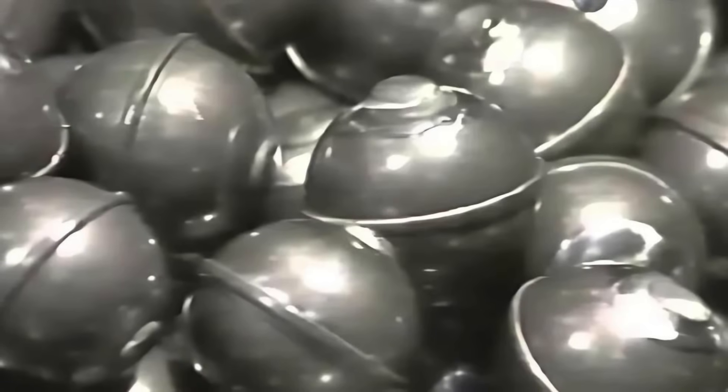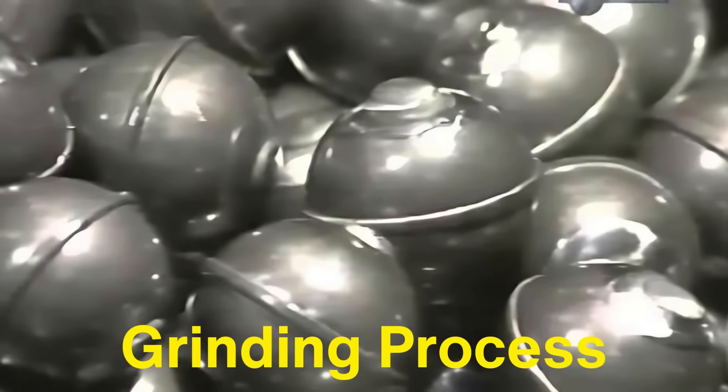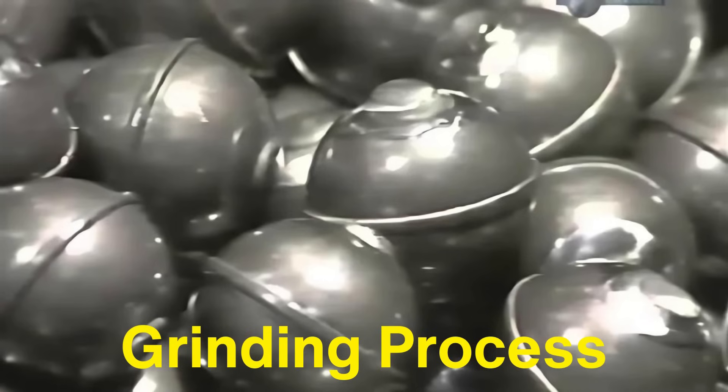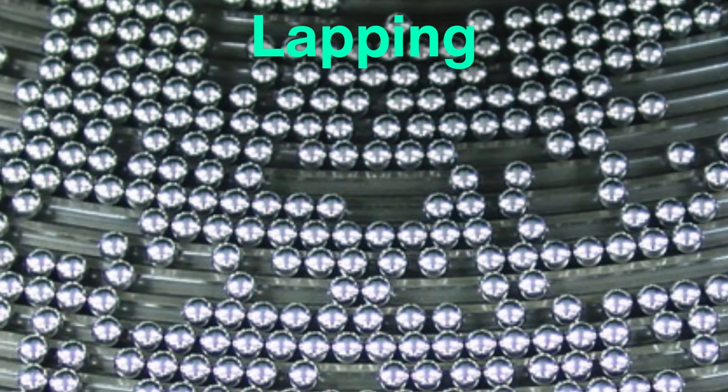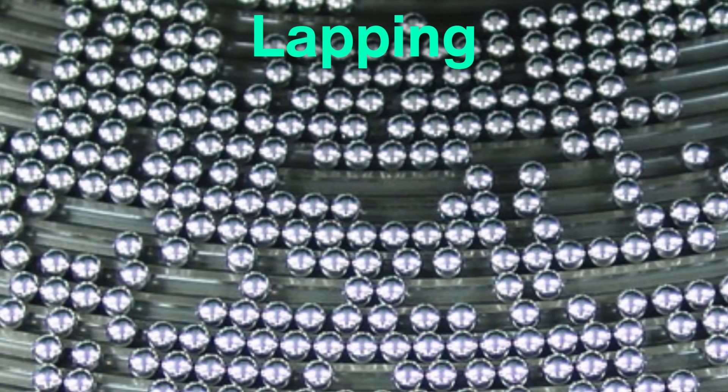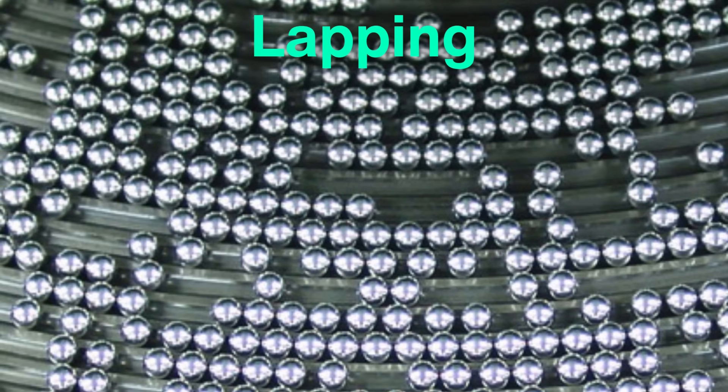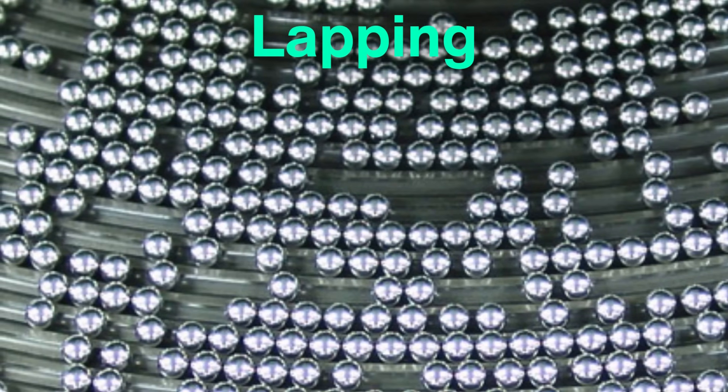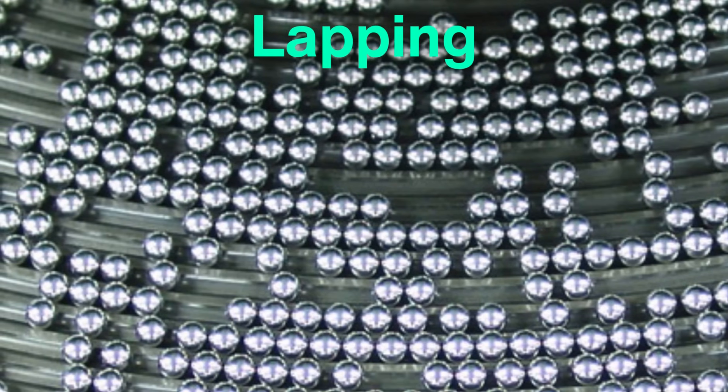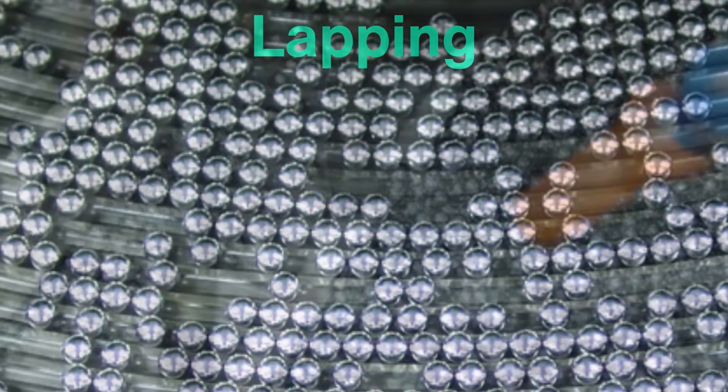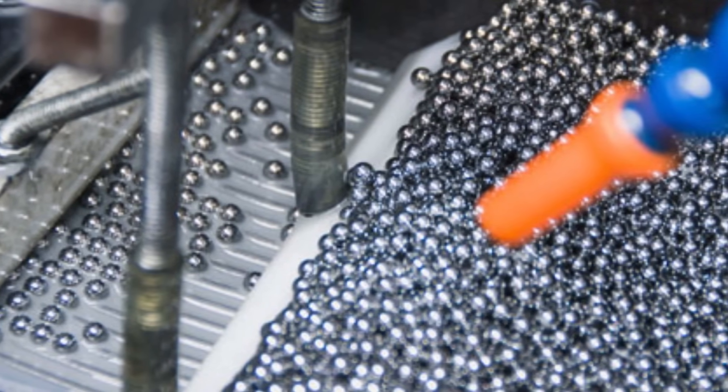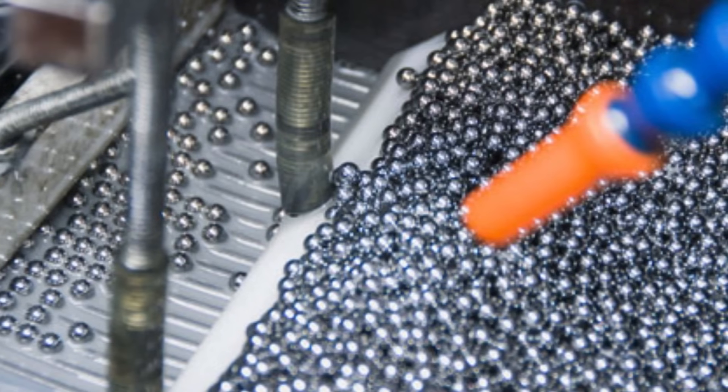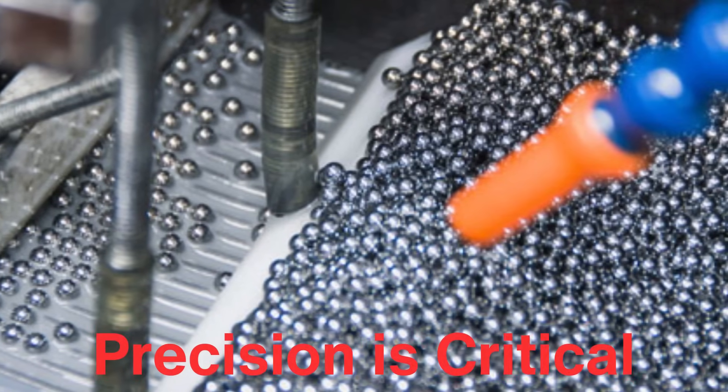Next, the balls go through a grinding process to remove any surface imperfections and ensure they are perfectly round. Grinding is followed by lapping, where the balls are rolled between two plates coated with an abrasive substance, further refining their smoothness. At this stage, the balls are measured to meet extremely tight tolerances. Even the tiniest deviation in roundness could lead to increased friction, wear or failure in high-performance applications, so precision is critical.